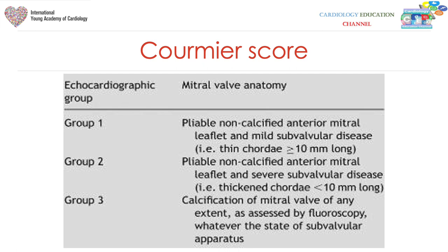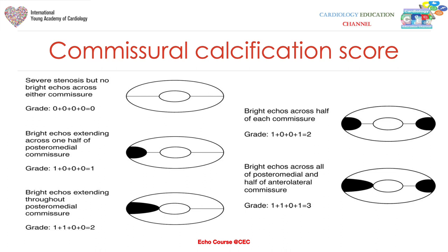The Cormier score classifies patients into groups one, two, and three based on calcification, pliability, and cordal affection. The commissural calcification score is also very important and should be regularly included alongside the Wilkins score, because if both commissures are closed and calcified, balloon mitral valvuloplasty will tear the leaflet itself rather than opening the commissures, regardless of the Wilkins score.